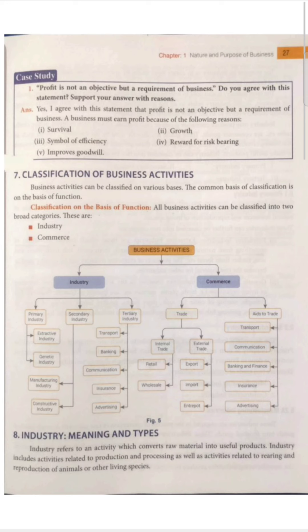Business activities can be classified on various bases. The common basis of classification is on the basis of function. Business activities can be classified into two broad categories: first one is industry, and second is commerce.